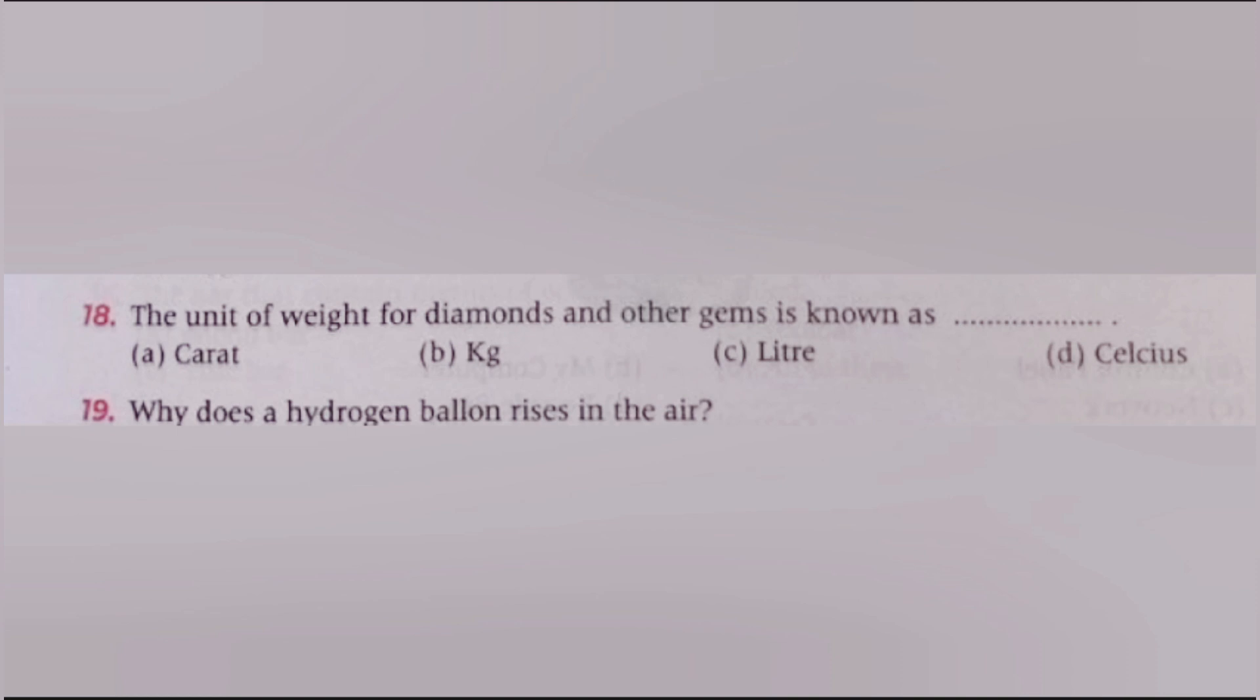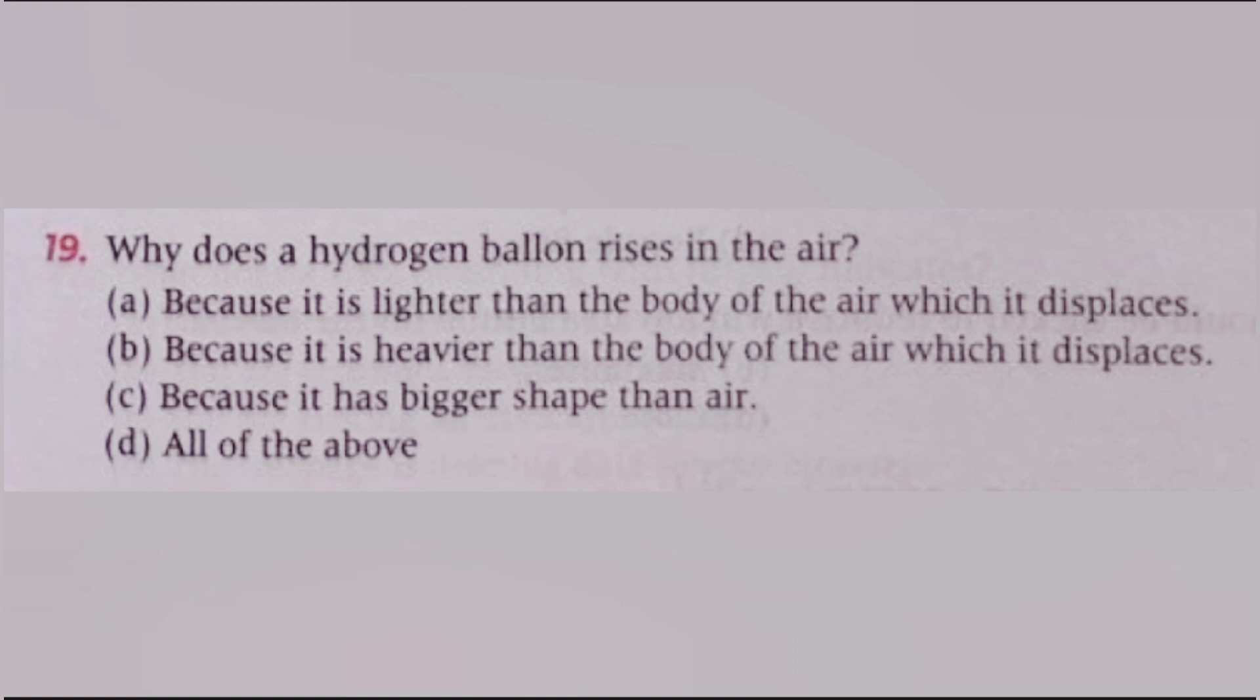Next, the unit of weight for diamonds and other gems is known as: carat, KGs, liter, Celsius. The answer is A, carat. Next, why does a hydrogen balloon rise in the air? A, because it is lighter than the body of the air which it displaces. B, because it is heavier than the body of air which it displaces. C, because it has bigger shape than air. D, all of these. The answer is A, because it is lighter than the body of the air which it displaces.